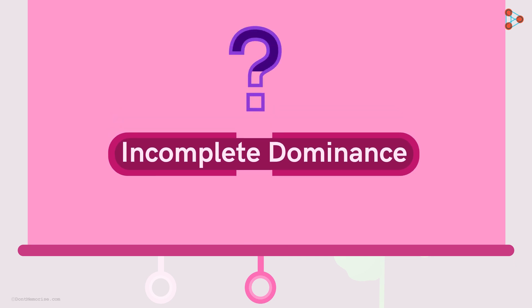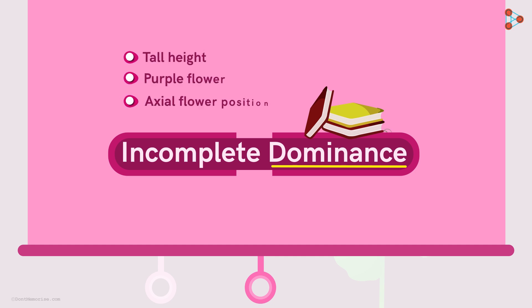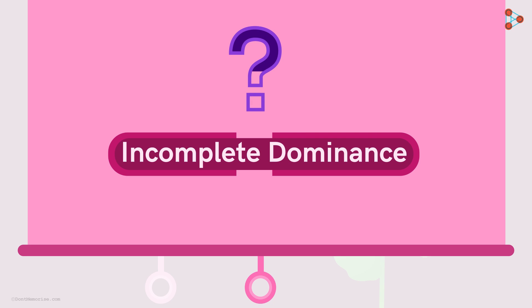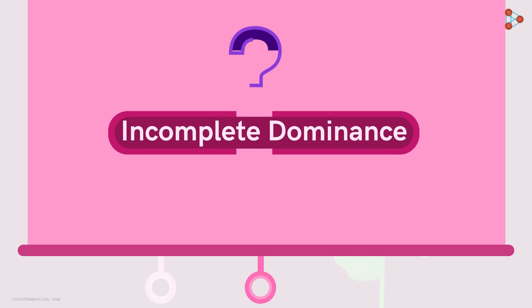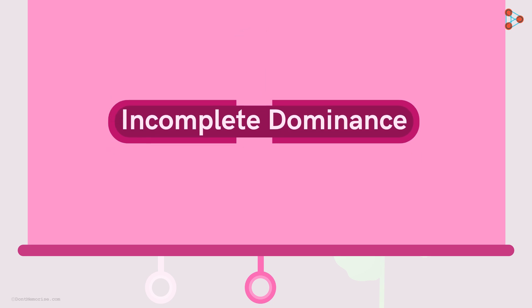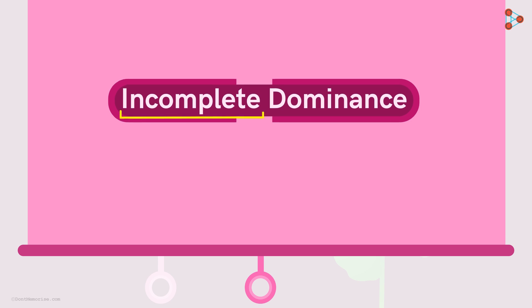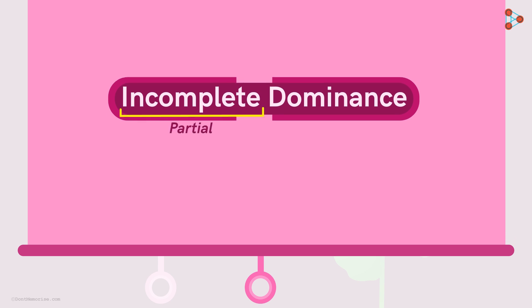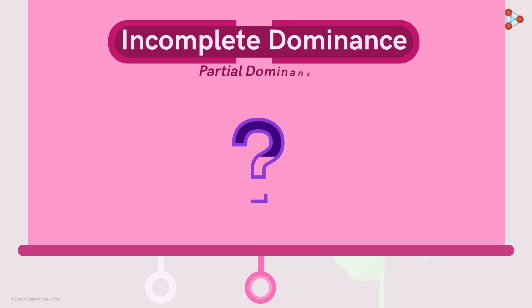So what does that mean? So far we have studied only dominance of characters in the pea plant. What does this concept of incomplete dominance mean? Let's begin with understanding the name. Incomplete here means partial.